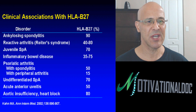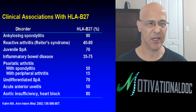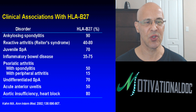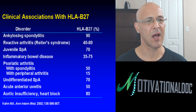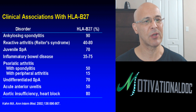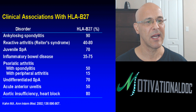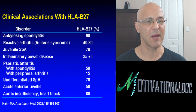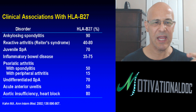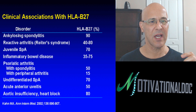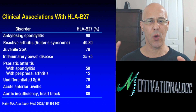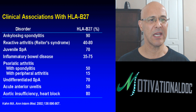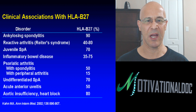This HLA-B27 antigen correlates to other conditions like reactive arthritis, juvenile problems, inflammatory bowel diseases, psoriatic conditions, and even uveitis. But generally when we see HLA-B27, we always think of ankylosing spondylitis first.